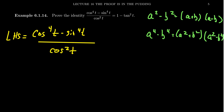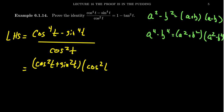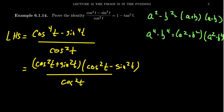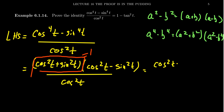So let's use that algebraic factorization right here. The cosine to the fourth minus sine to the fourth will factor as cosine squared t plus sine squared t, times cosine squared t minus sine squared t, all over cosine squared t. Notice here — my Pythagorean sense is tingling. Cosine squared plus sine squared is equal to one by the mother of all trigonometric identities. So that sum of squares disappears because of the Pythagorean identity.